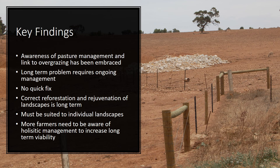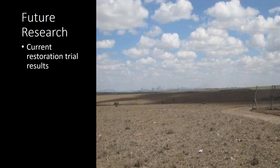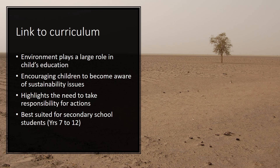While awareness of pasture management and the link to overgrazing and the drying landscape have been embraced, it is important to take into consideration that there is by no means a quick fix to this long-standing issue. Correct reforestation and rejuvenation of landscapes is a time-consuming process that requires much knowledge and understanding of the attributes of each individual landscape. The flora replanted and established must be able to support a healthy soil ecosystem for maximum results. As many more farmers and producers are joining, more research articles will become available on current restoration trial results within the nation's agricultural sector.